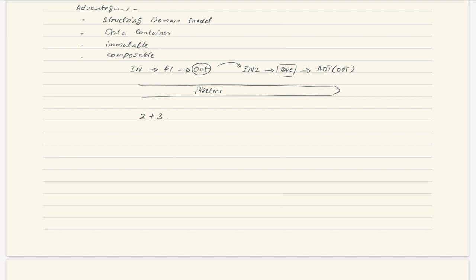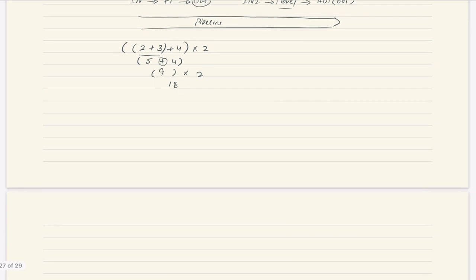For example, just like 2 plus 3 plus 4, then multiply by 2: we use an ADT, generate a result — something like 5 plus 4 — and then we can apply further operations. So this is how composability works with ADTs. We can use those compositions as a pipeline where each result feeds into the next operation.